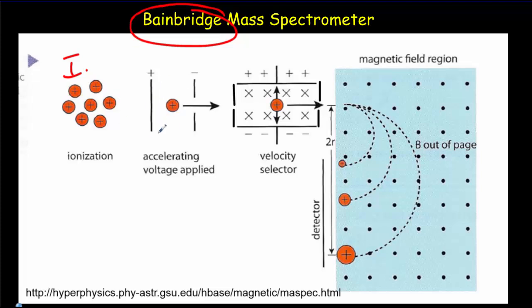They then enter the second region where you've got accelerating plates that will give the ions a fairly high speed. But they'll have a range of speeds as they enter the third region which is called the velocity selector.